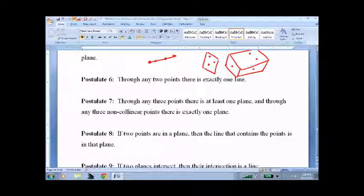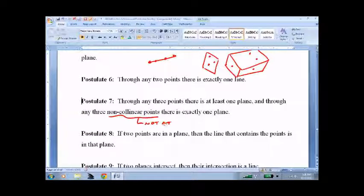Through any three points, there's at least one plane. Through any three non-collinear points, you've got to watch out for the definitions, they'll throw you off. There's exactly one plane.